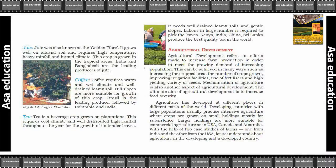Jute is also known as the golden fiber. It grows well on alluvial soils and requires high temperature, heavy rainfall, and humid climate. This crop is grown in the tropical areas. India and Bangladesh are the leading producers of jute.